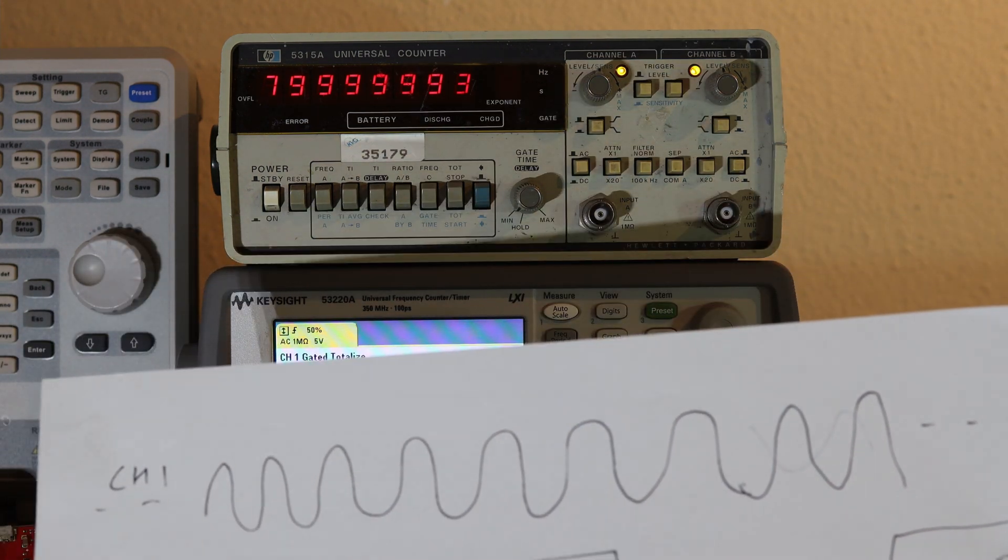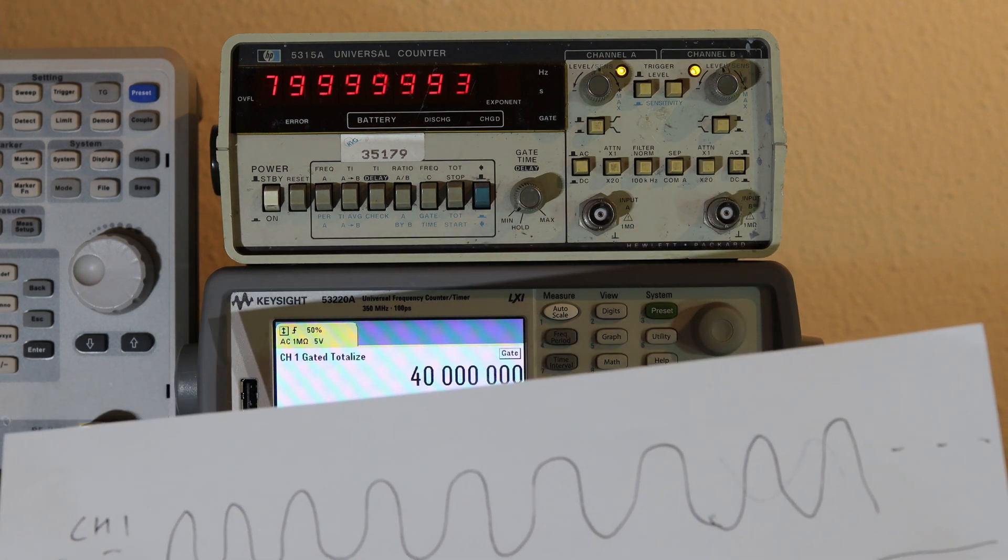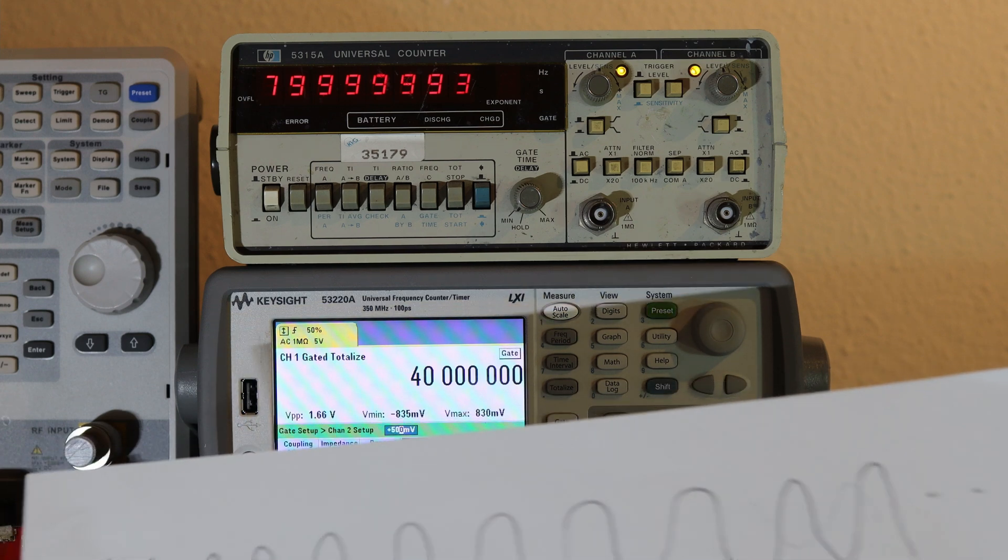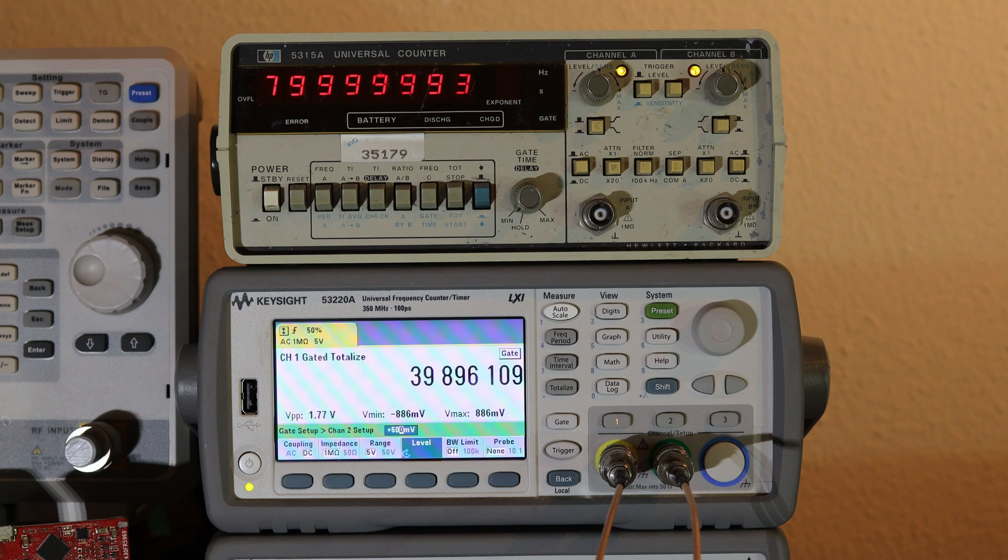As I have previously mentioned, I have selected the gate time to be positive pulse only. So 53220A for 1 second of total period of frequency, half a second here, it's showing around the count of half of 80 mega, which is 40 mega pulses. I can go down and have it 500 millihertz. Now you can see it's 500 millihertz. It's supposed to exactly show 80 mega pulses.